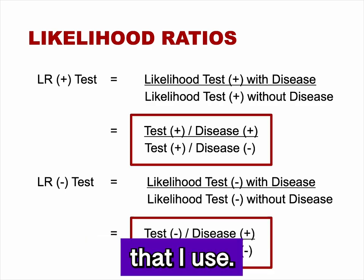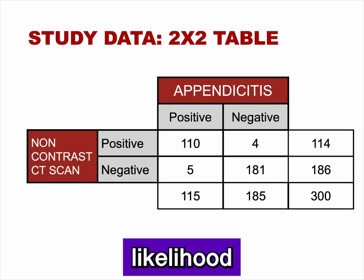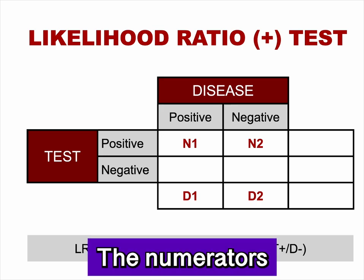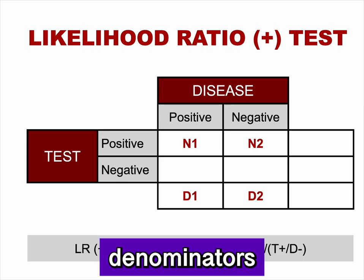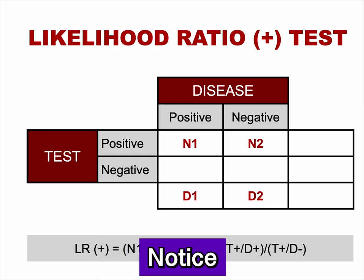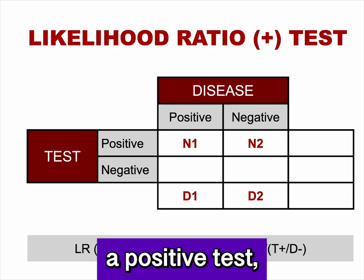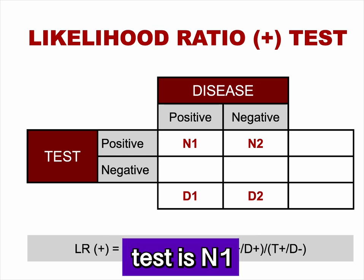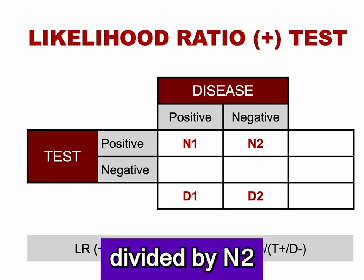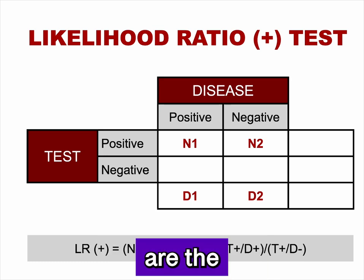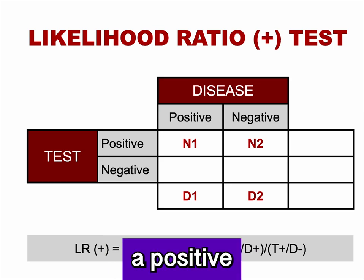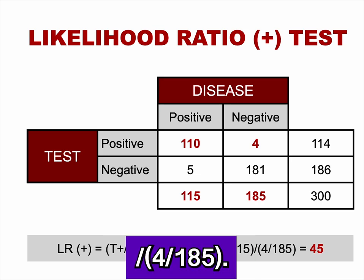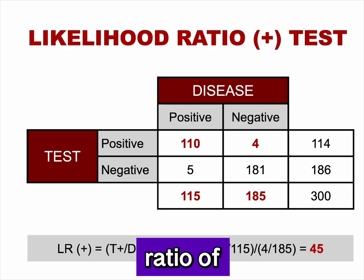This is our study data from which we can calculate the likelihood ratios. We can easily calculate the likelihood ratio of a positive test from a 2x2 table. The numerators are N1 and N2, and the denominators are D1 and D2. We only use the two cells indicating a positive test, plus the marginal totals for disease positive and disease negative. The likelihood ratio is 110/115 divided by 4/185, giving a likelihood ratio of a positive test of 45.